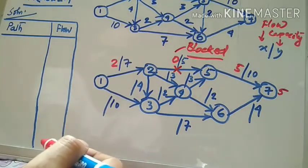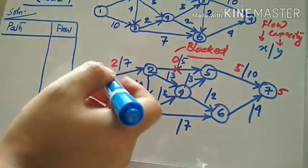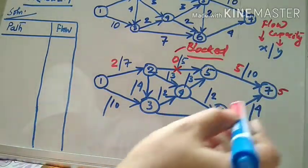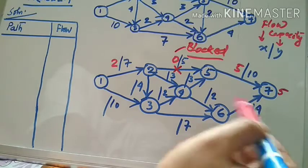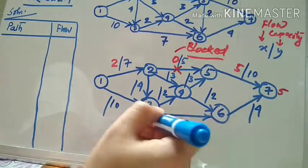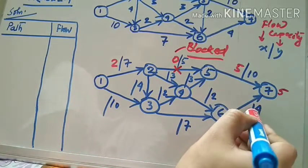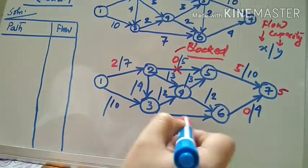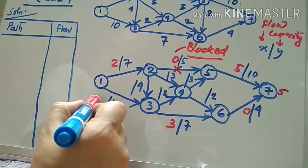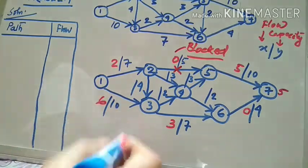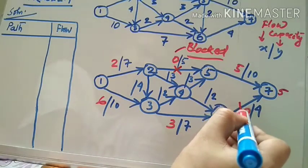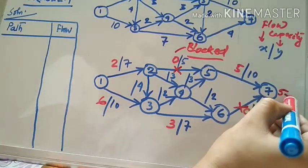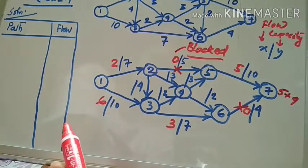Now let us take another path: 1, 3, 6, 7. In doing so we find 4 as the least value. We subtract 4 from the other weightages: the first one gives you 0, then 7 minus 4 gives 3, and it is 6 over here. Now as you can see this edge is 0, meaning it is exhausted, so we block this one. So we write the flow as 4 for this path.